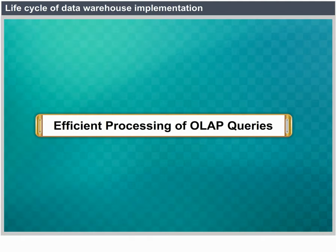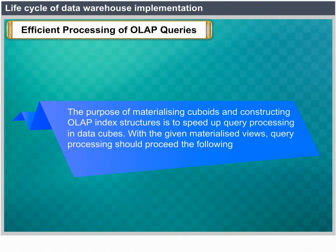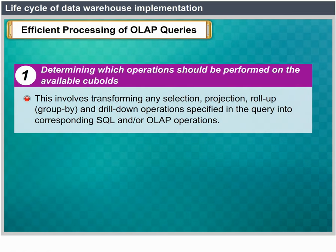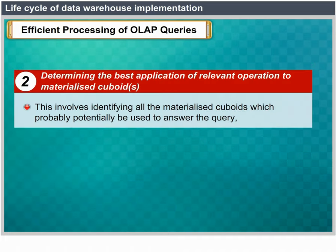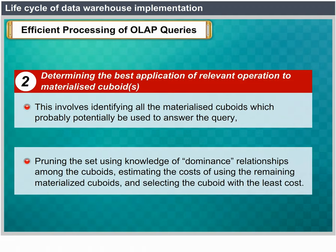Efficient processing of OLAP queries. The purpose of materializing cuboids and constructing OLAP index structures is to speed up query processing in data cubes. Given materialized views, query processing should: first, determine which operations should be performed on the available cuboids, transforming any selection, projection, roll-up, group-by and drill-down operations into corresponding SQL and/or OLAP operations; second, determine to which materialized cuboids the relevant operations should be applied — identifying all potentially useful materialized cuboids, pruning using dominance relationships, estimating costs and selecting the cuboid with the least cost.